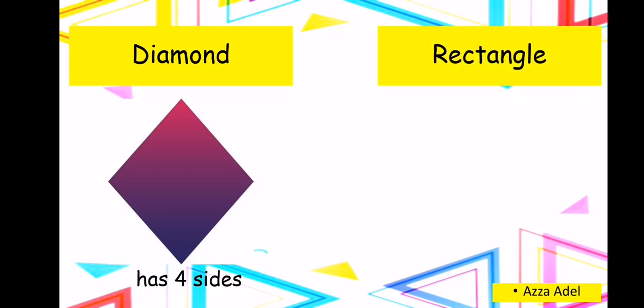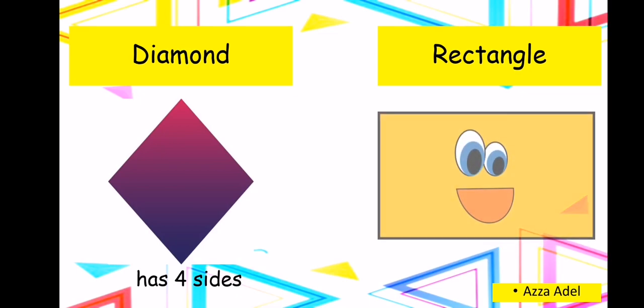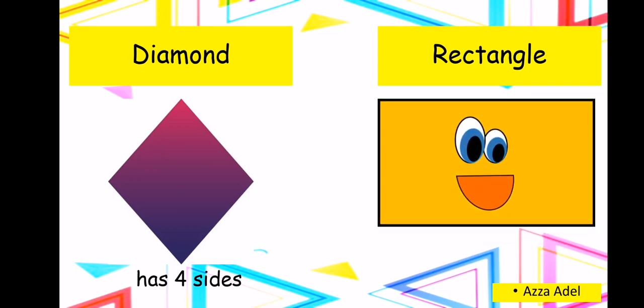Rectangle. A rectangle has four sides. What are the things that look like a rectangle? Look around you, hunt it and find a rectangle.